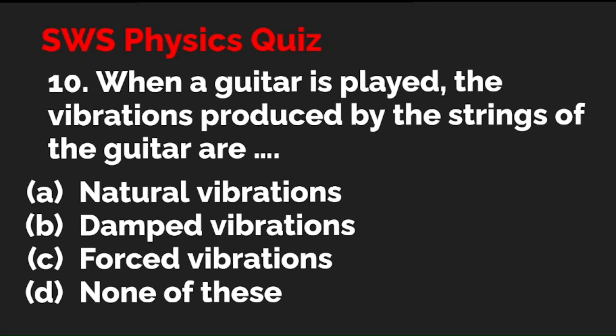Question 10: When a guitar is played, the vibrations produced by the strings of the guitar are — option A: natural vibrations; option B: damped vibrations; option C: forced vibrations; option D: none of these. The correct answer is forced vibrations. I hope all of you did reasonably well, or perhaps got 10 out of 10, which would be fantastic. Congratulate yourself if you did so, and continue your preparation for the physics paper. If you did not do very well in Semester 1, this is your big chance to make up. All the best to you. Thank you very much for watching.